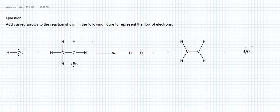After summarizing what should happen during the chemical reaction, we can draw our curved arrows. This is a polar reaction, not a radical reaction — we don't see any radicals in the reactants or products — so we have to draw full-headed arrows.